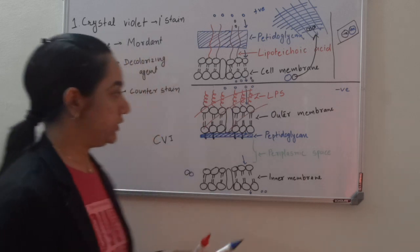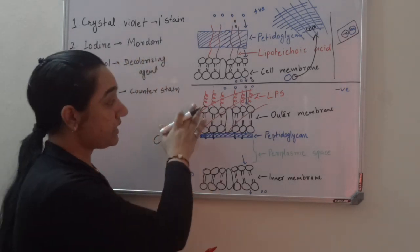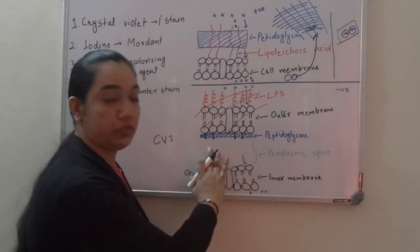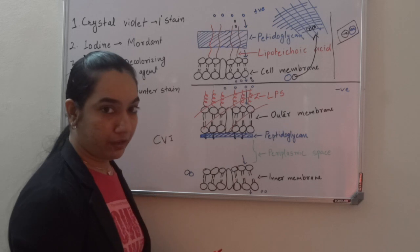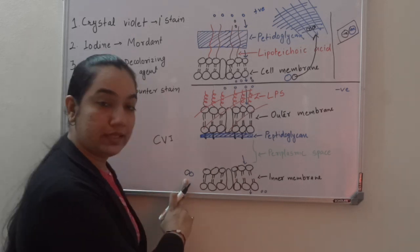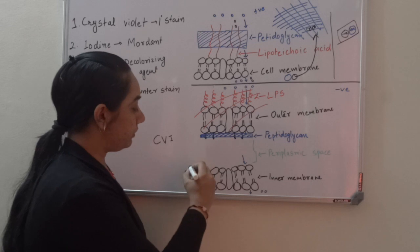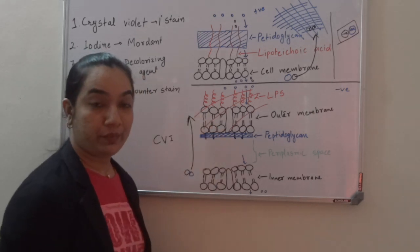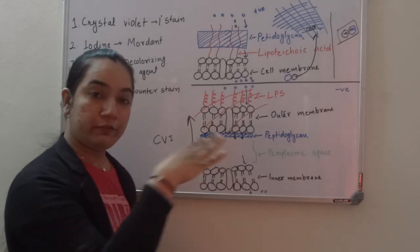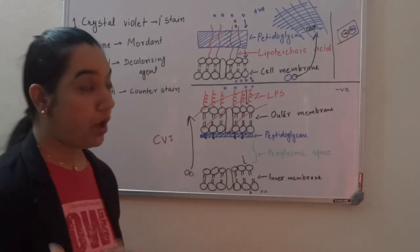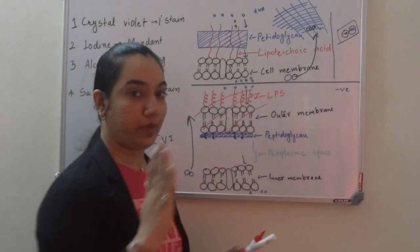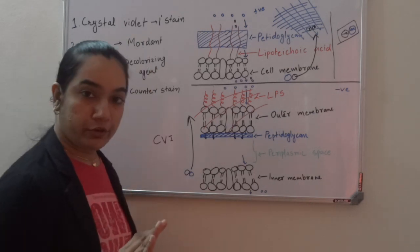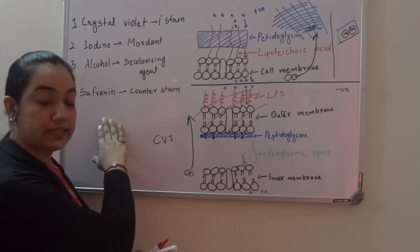In gram negative bacteria, because alcohol dissolves the lipid outer membrane, the remaining peptidoglycan is too thin and too weak to hold the CVI complex. So the alcohol wash leaches out the CVI complex from gram negative cells. At this point, if we observe the slide under a microscope, we can only see gram positive bacteria — gram negative bacteria are colourless.